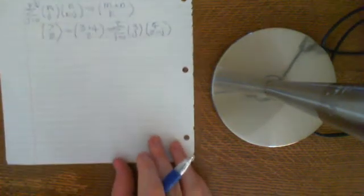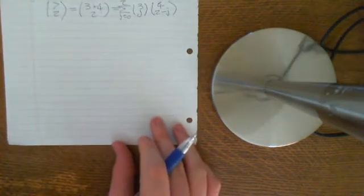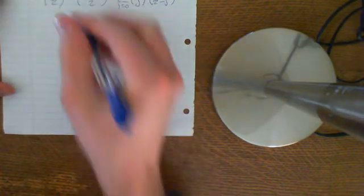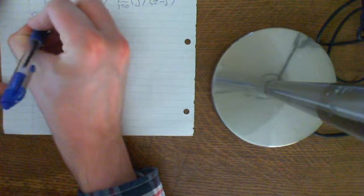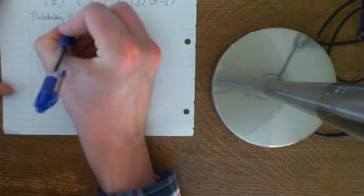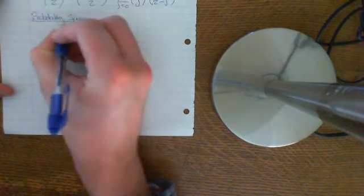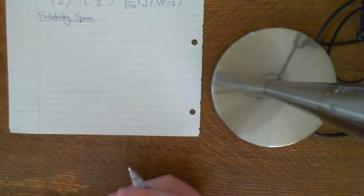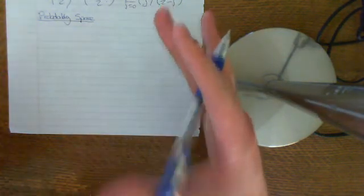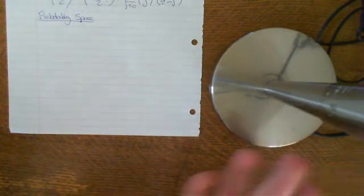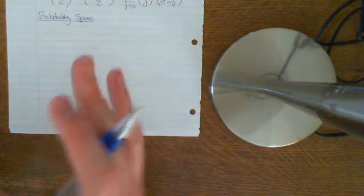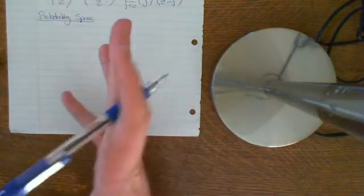In this next video in the probability series, we are going to discuss the concept of a probability space. This really is the generalization — the foundations of measure theory. Measure theory has two origins: one is the probabilistic side, and the other is from analysis, specifically the Lebesgue measure and the generalization of integration onto a more general space. But in this one, we're going to just discuss probability spaces.